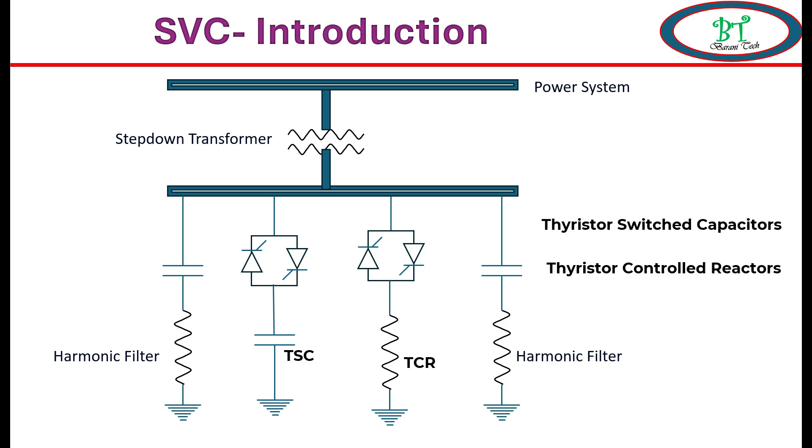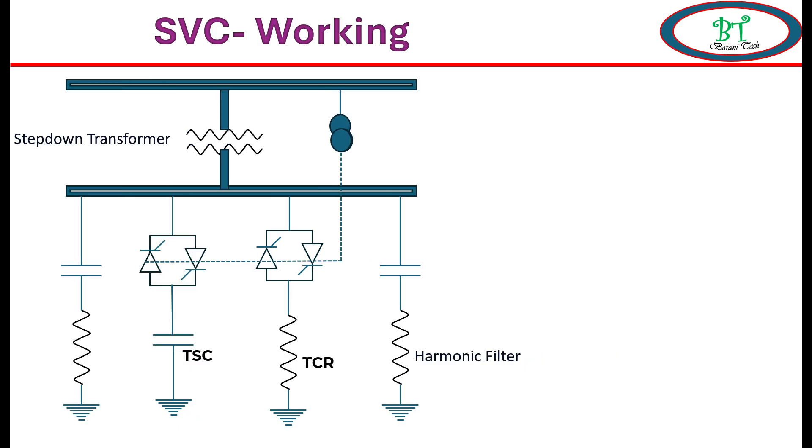If we see the operation of TSC, it will get switched on when the power system has a lagging power factor and wants to improve the power factor to normal. When the power factor goes down, then TCR will get on and reduce the power factor to normal.